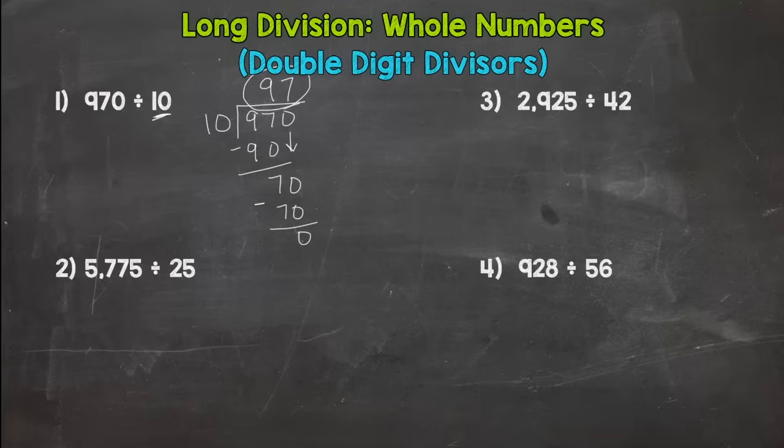So let's go to number two here. We have 25 as our divisor and 5,775 as our dividend. So we start with how many groups of 25 can we pull out of 5? Well we can't so we need to look at the 57. How many 25s out of 57? Well 25, 50, 2. So we need to put the 2 above the 57, do not put it above the 5. 2 times 25 is 50. Subtract, I get 7, bring down my 7.